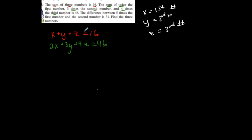Let me read that again to make sure I wrote it correctly. Twice the first number — x is the first number, so 2x. Three times the second number — y is the second number, so 3y. Four times the third number — z is the third number, so 4z — is equal to 46.